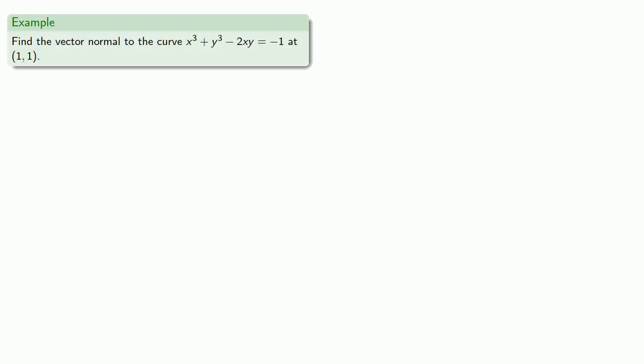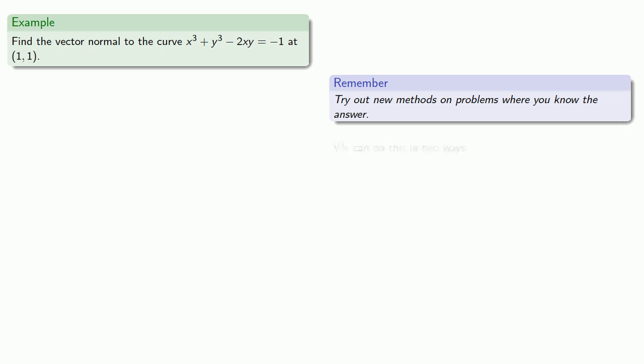And this gives us another useful and relatively easy thing to find: the vector normal to the curve at a point. Now, it's useful to remember that we should always try out new methods on problems where you know what the answer is supposed to be. And so keep in mind that for this problem we can do this in two ways. We can find the tangent line, then find the perpendicular line, or we can use the gradient. And we'll do it both ways.